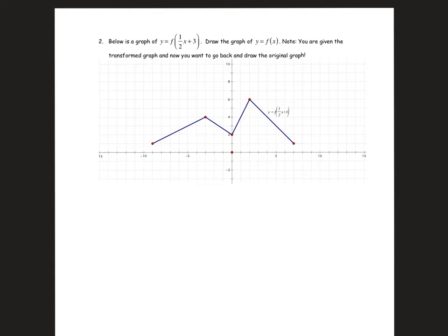In order to think about how to do that, I want to ask myself what did I do to get from my normal function. I don't know what that looks like right now because that's what I'm trying to find, but what steps would I have had to take if I had the normal function and wanted to graph this transformed function.